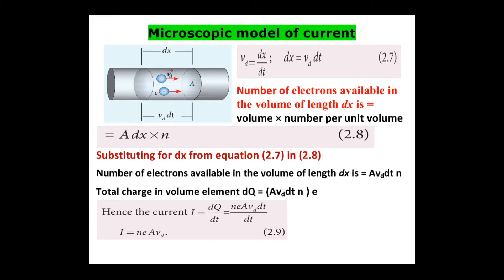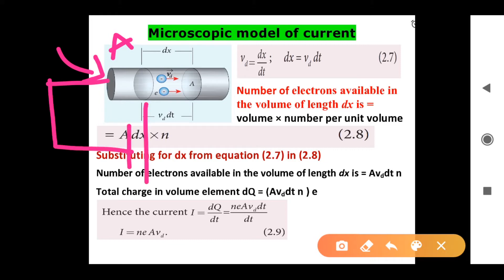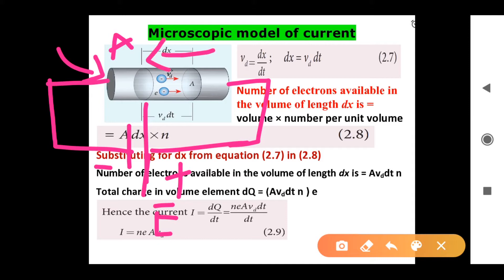First, let us consider a conductor with cross-sectional area A. Then, electric field is applied from right to left — right to left, students — because the battery is negative on one side, positive on the other. So the electric field is applied from right to left, and electrons move in the opposite direction, so electron flow is left to right.